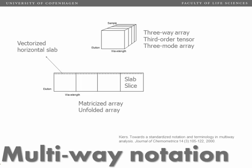Finally, in this first video, we're going to have a brief look at notation — just for convenience when you look into the literature. We talk about three-way data, but we also sometimes call these third-order tensors or three-mode arrays. In some areas of research there's a difference between mode and way, but in chemometrics we usually don't make any distinction between three-way and three-mode data. The data sets can be split up into smaller entities by taking sub-matrices — we call these slabs or slices — and we can take them in different ways: frontal slices, horizontal slices, or vertical slices. We can also unfold or matricize, as shown here with an unfolded three-way array.